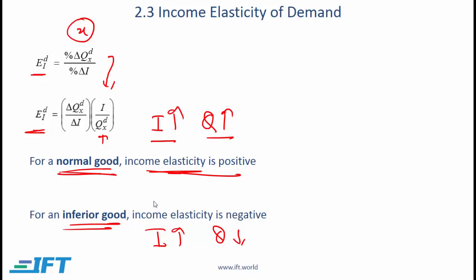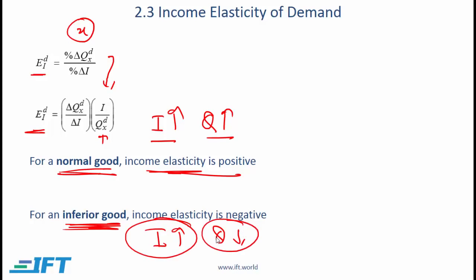Some goods are inferior goods — when income goes up, the quantity demanded comes down. Consider places like India and Pakistan and think about a regular bicycle used for actual transportation, not recreation. Generally, bicycles are used by relatively poor people. If their income levels go up, they would prefer a motorcycle. So in South Asia, regular bicycles are probably inferior goods.